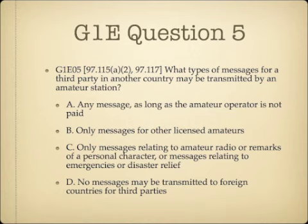Question 5. What types of messages for a third party in another country may be transmitted by an amateur station? A, any message as long as the amateur operator is not paid; B, only messages for other licensed amateurs; C, only messages relating to amateur radio or remarks of a personal character or messages relating to emergencies or disaster relief; or D, no messages may be transmitted to foreign countries for third parties.